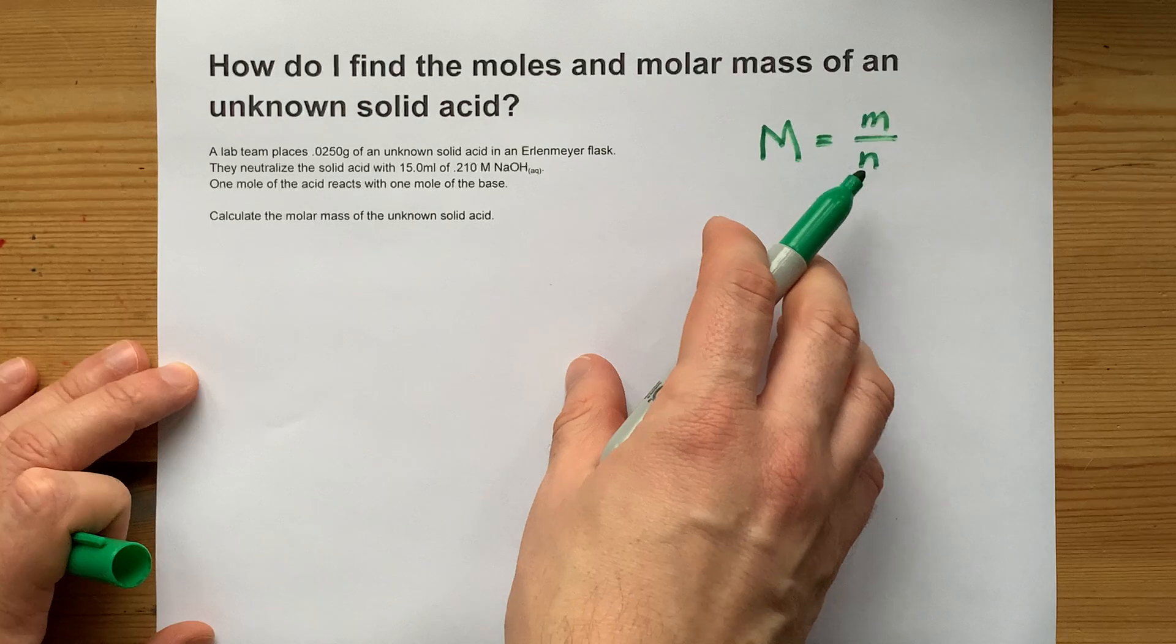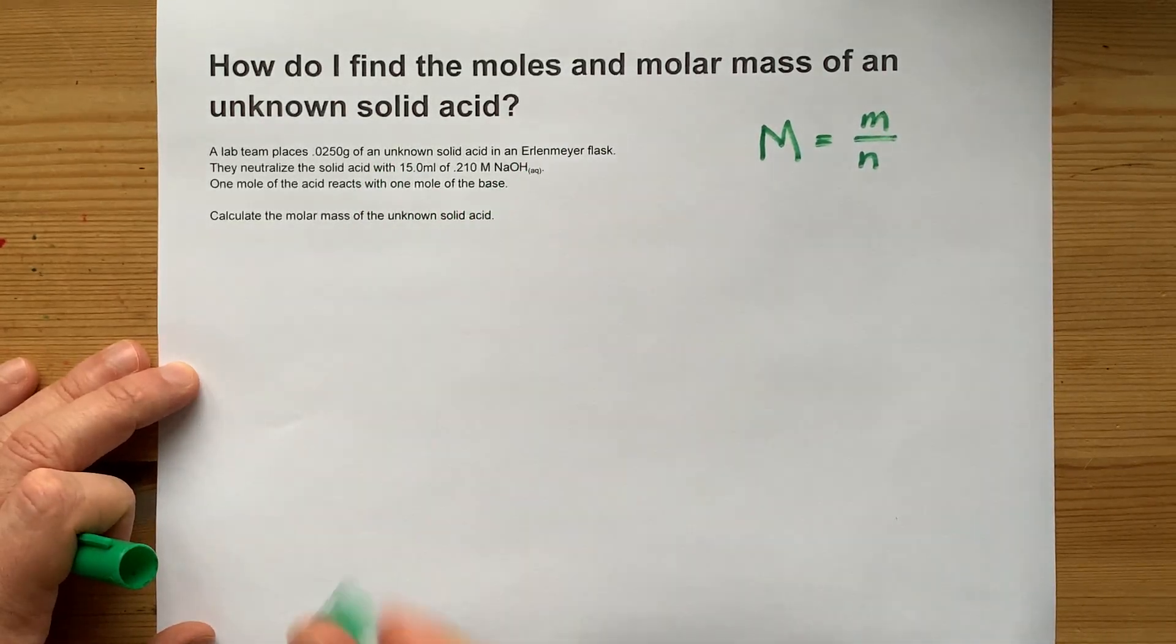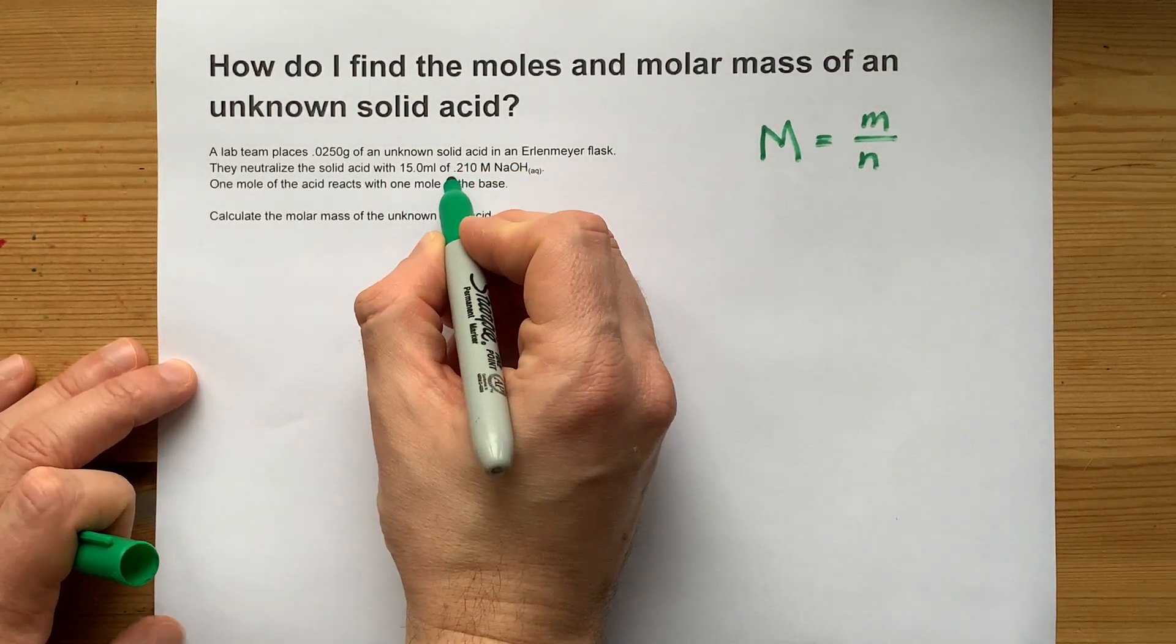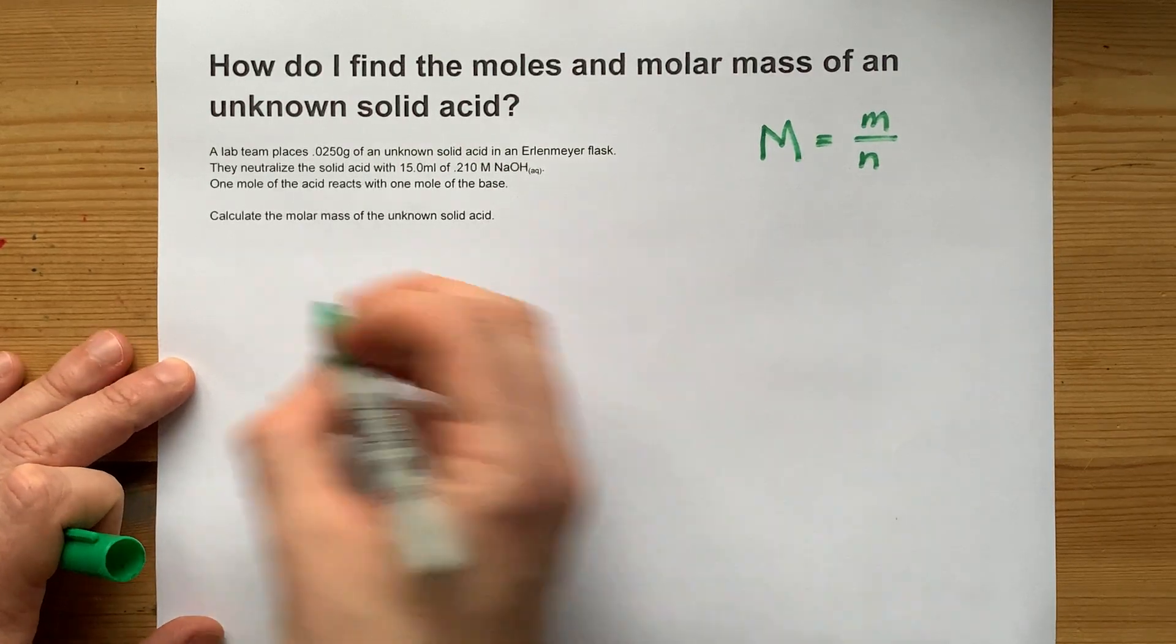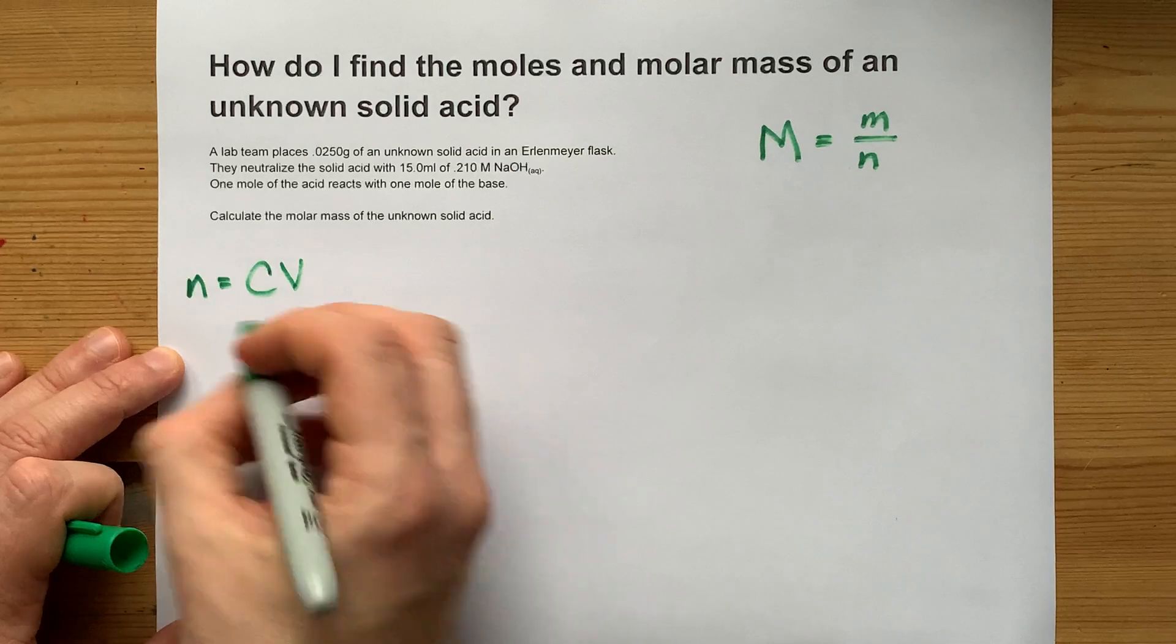Unfortunately, we don't have the number of moles of acid, but we actually do have the number of moles of NaOH. We're told that there's 15 milliliters of 0.210 mole per liter. The number of moles is concentration times volume.